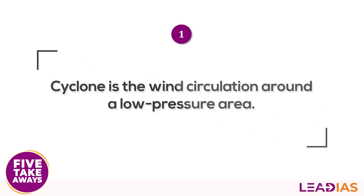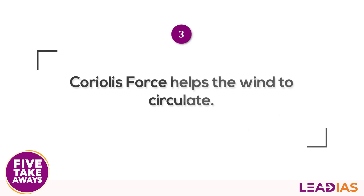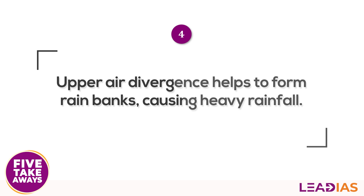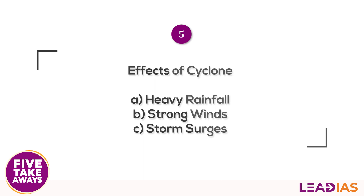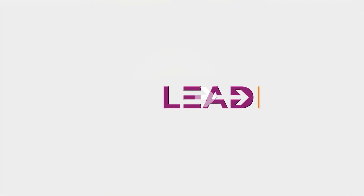What is a cyclone? Cyclone is the wind circulation around low pressure. What are the three conditions for cyclone? First condition: sea surface temperature above 27 degrees Celsius — it causes a low pressure area in the oceans. Second: Coriolis force — it helps the wind to circulate. Third: upper air divergence — it helps to form rain bands, and these rain bands cause heavy rainfall. The effects of cyclone are heavy rainfall, strong winds, and storm surges.